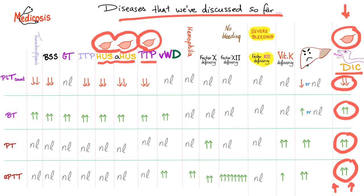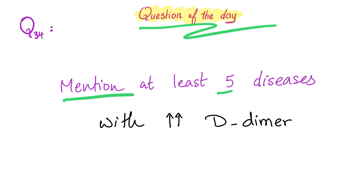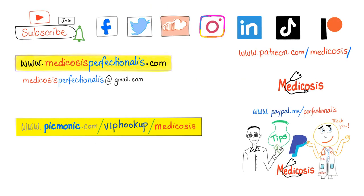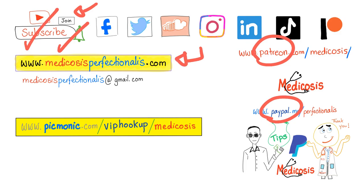Schistocytes are also known as helmet cells or fragmented red blood cells. Question of the day: please mention at least five diseases with elevated D-dimer — the answer will be in the next video. Please subscribe, hit the bell, and click the join button. Thank you for watching. As always, be safe, stay happy, and study hard. This is Medicosis Perfectionist, where medicine makes perfect sense.